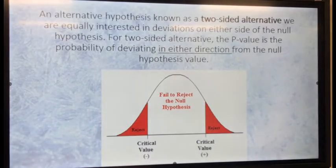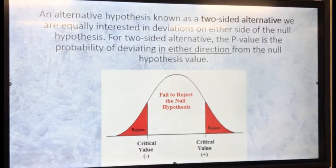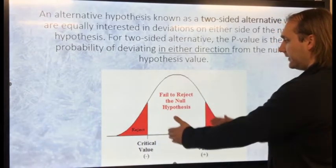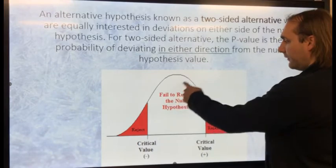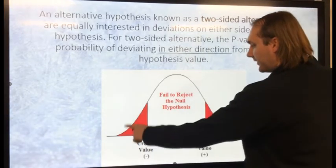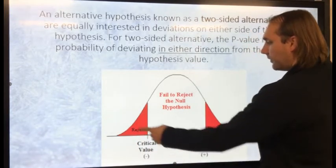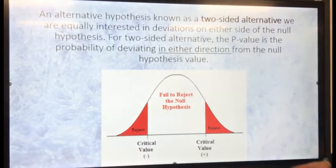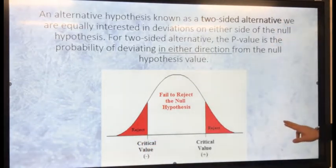An alternative hypothesis known as a two-sided alternative means we are equally interested in deviations on either side of the null hypothesis. For a two-sided alternative, the p-value is the probability of deviation in either direction from the null hypothesis value. So here, we have our null hypothesis; if we fail to reject it, outside is our rejection range — we want both this end and this end. This is our two-sided alternative.